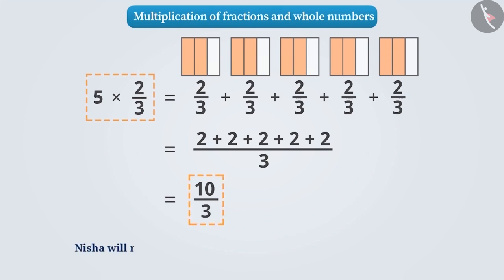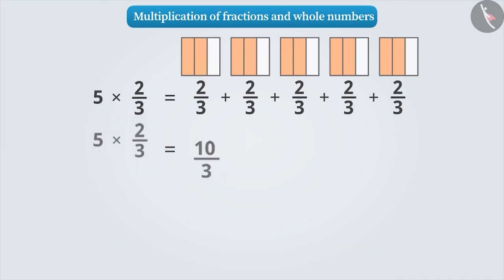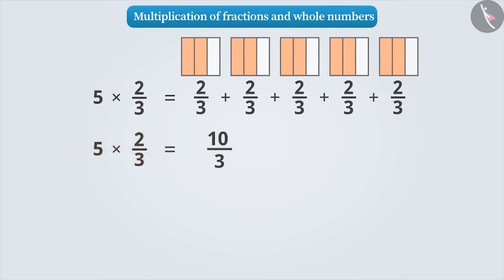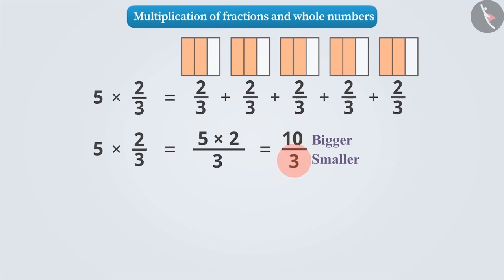This means that Nisha will need 10 by 3 teaspoons of sugar to make 5 cups of tea. So, we can say that when we multiply a whole number and a fraction, we multiply the whole number by the numerator of the fraction, and the denominator remains the same. Here, the numerator 10 is greater than the denominator 3. Such a fraction is called an improper fraction.